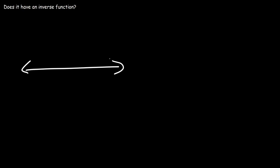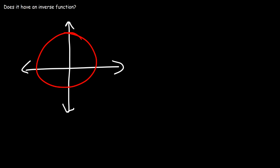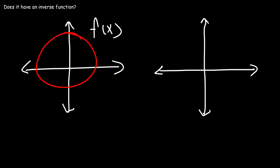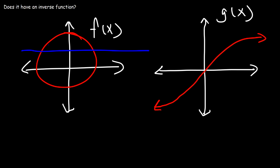Let's look at some more examples. Go ahead and determine if the following functions have inverse functions. Let's call this f of x. So f of x does not pass the horizontal line test. It is not a one-to-one function, and so it doesn't have an inverse function. g of x passes the horizontal line test — it touches it only at one point. So g of x has an inverse function, and it is a one-to-one function.